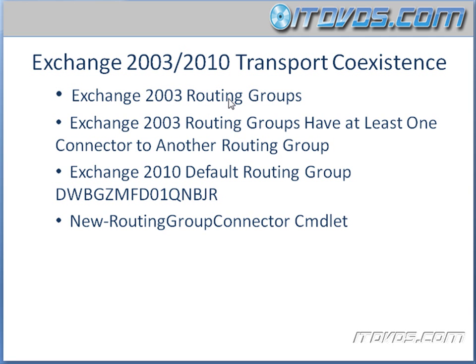Because Exchange 2010 doesn't use routing groups, in order for mail to pass back and forth between Exchange 2003 and Exchange 2010 servers, during the Exchange 2010 installation process a routing group is created for all of our Exchange 2010 servers. All Exchange 2010 servers are put into it — it's called the DWBGZMFD01QNBJR routing group. So if we have a lot of sites and a lot of Exchange servers, it's important to know that all Exchange 2010 servers go into this one routing group.